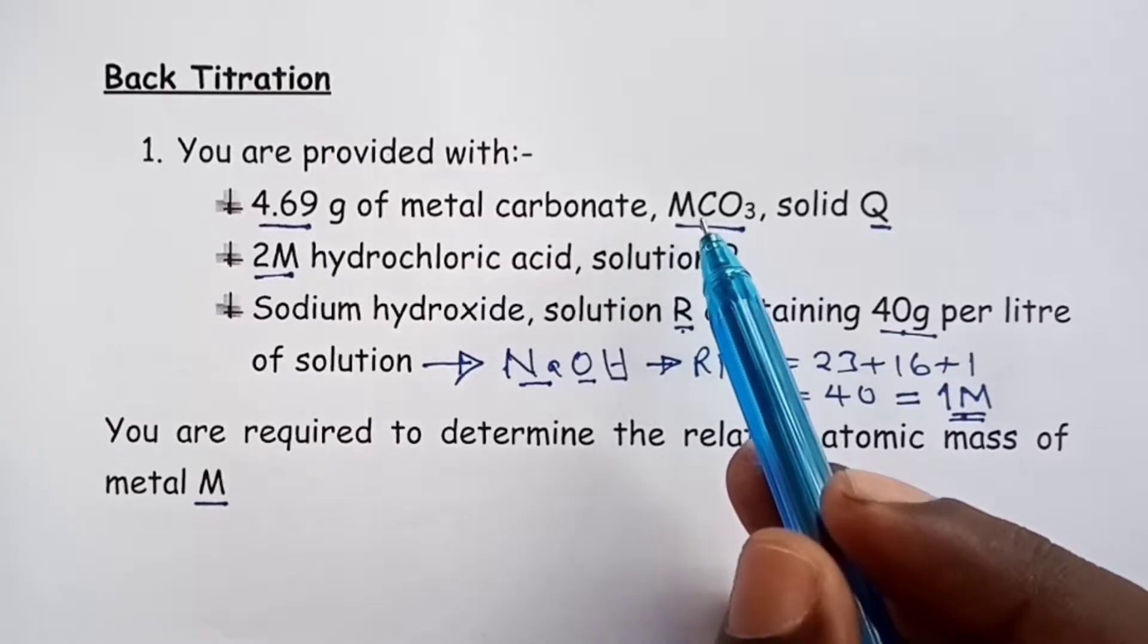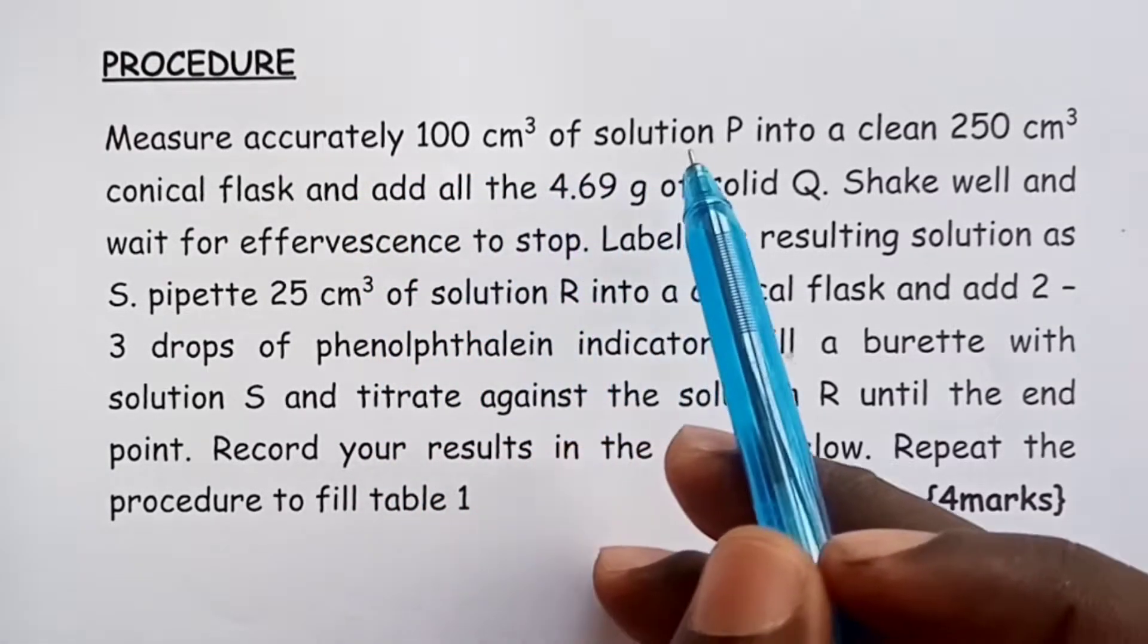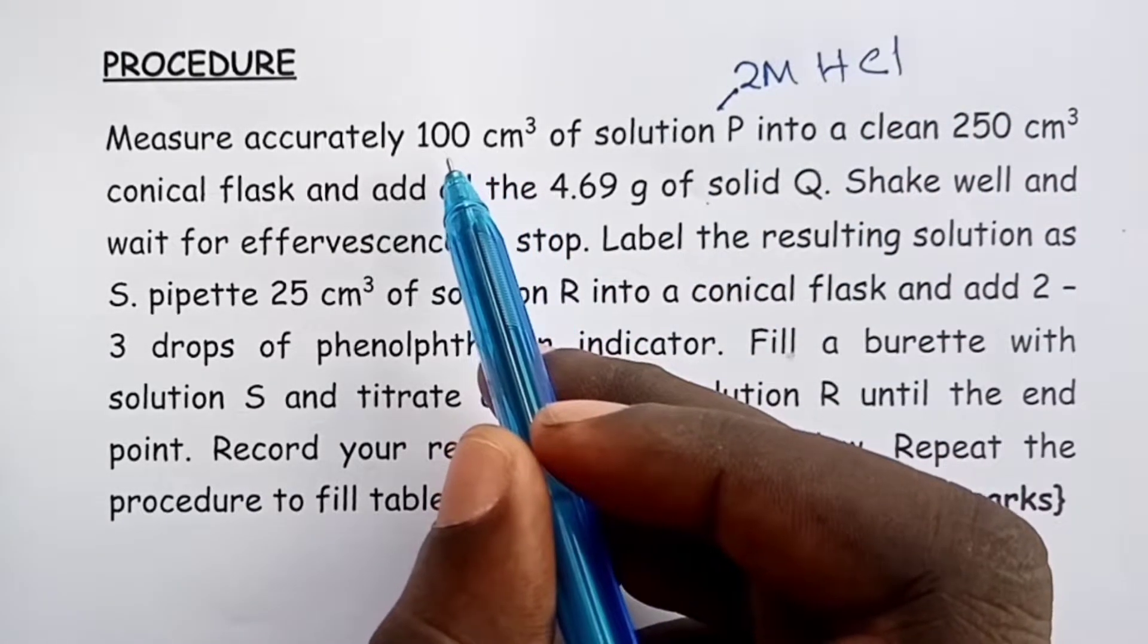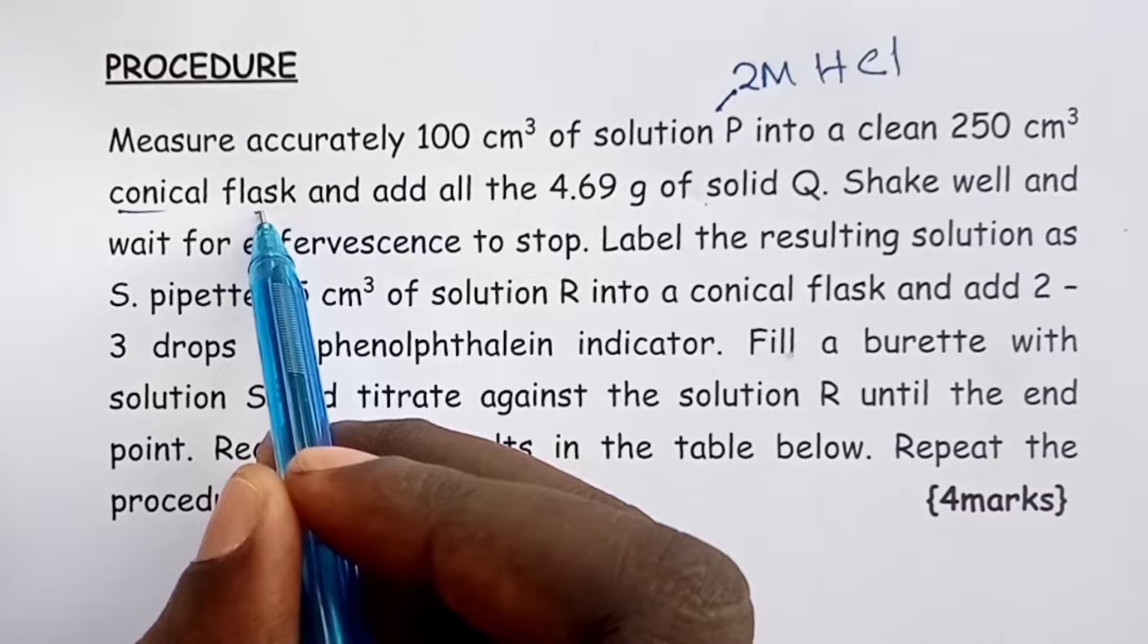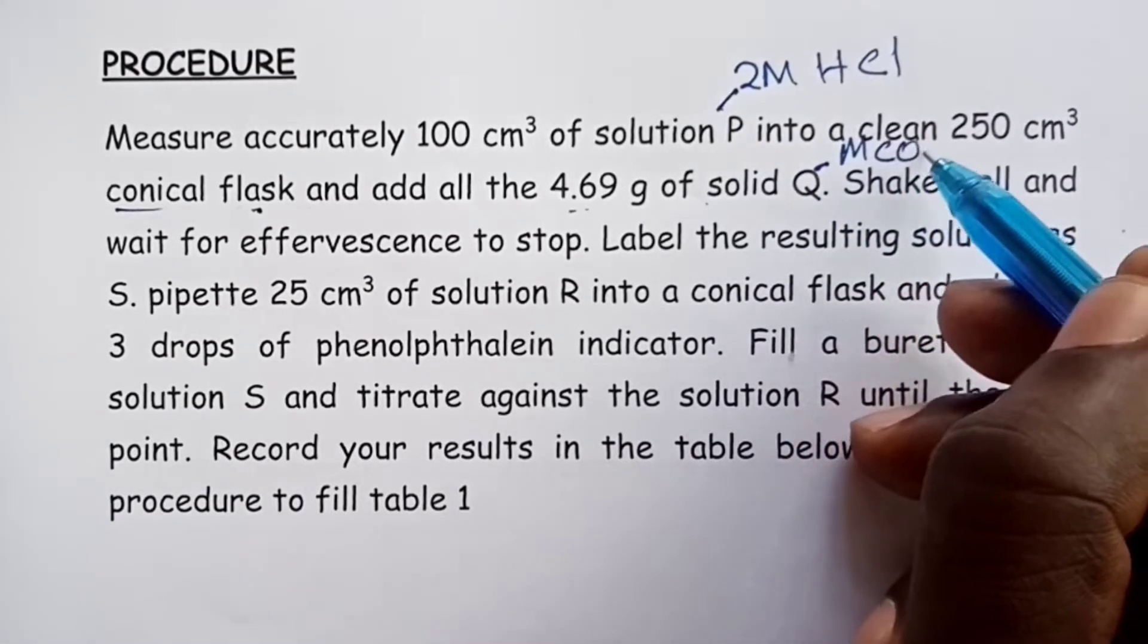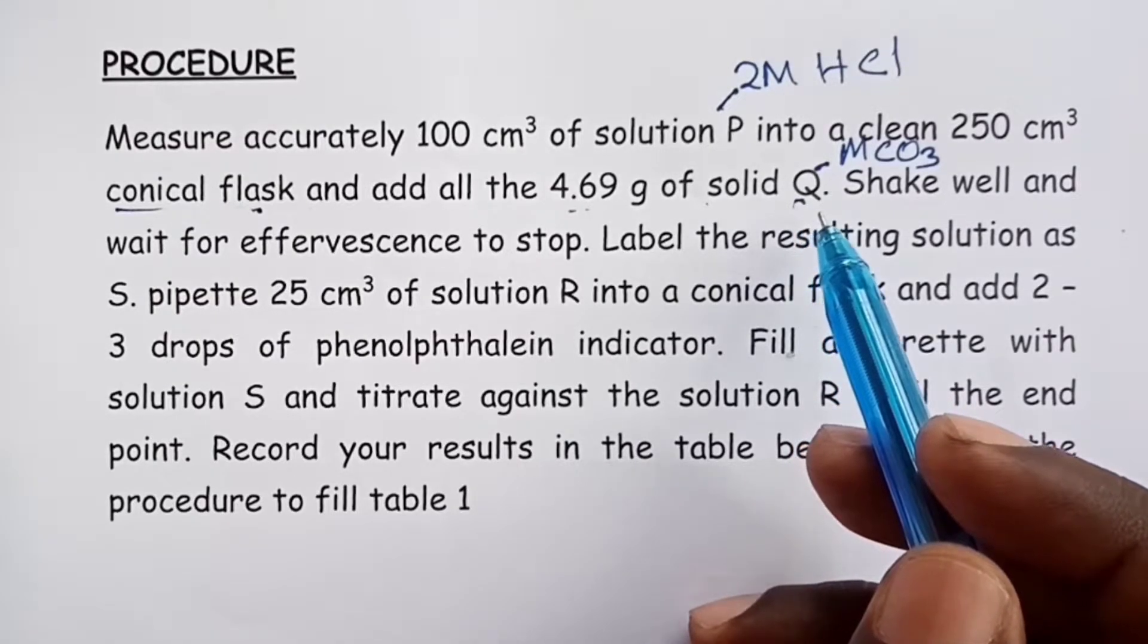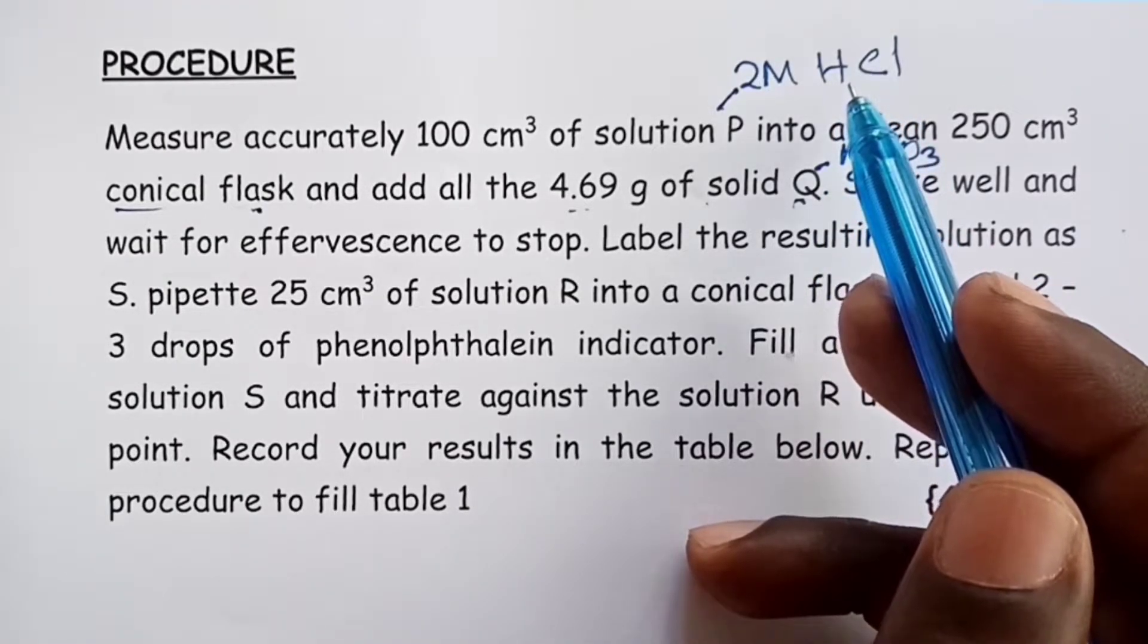Now to procedure. Measure accurately 100 cubic centimeters of solution P. Remember solution P was 2 molar hydrochloric acid. So we are supposed to only use 100 cubic centimeters of it. We put it in a clean 250 cubic centimeter conical flask. Then we shall add all the 4.69 grams of solid Q. Solid Q was our M carbonate. After this, we are supposed to shake well and wait for effervescence to stop. At this point, all the solid Q will have been used up, and we shall still have some excess HCl that we shall use in the titration.